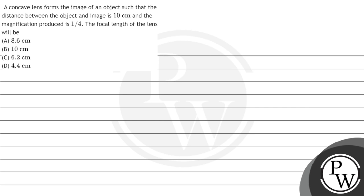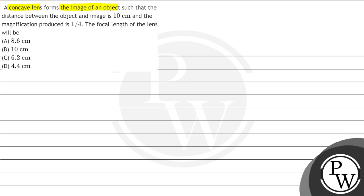Hello kids, let's read the question. The question says a concave lens forms the image of an object such that the distance between object and image is 10 cm. The magnification produced is 1/4. The focal length of the lens will be.